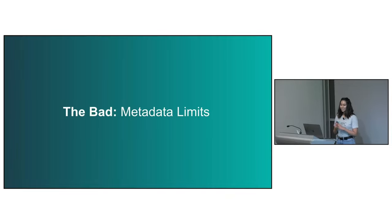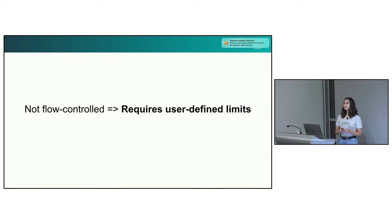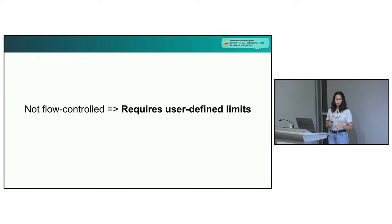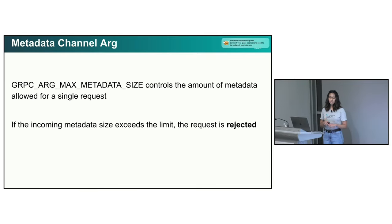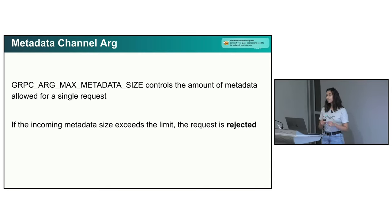Moving on, we have the bad. Metadata is a very powerful concept, but there are some nuances. The main issue is that it is not flow controlled. Whatever rate the sender is sending at is the rate that the metadata is going at, and this might be greater than what the receiver can receive at. So if we send a really large amount of metadata, we might end up overwhelming our receiver. gRPC C++ at least requires user-defined limits in order to limit the amount of metadata we receive. We use a channel arg called gRPC_arg_max_metadata_size to control the amount of metadata we allow a peer to give us per request. If the incoming metadata size exceeds that limit, the request will be rejected — and it's important to note this only applies per request, not to the whole connection.